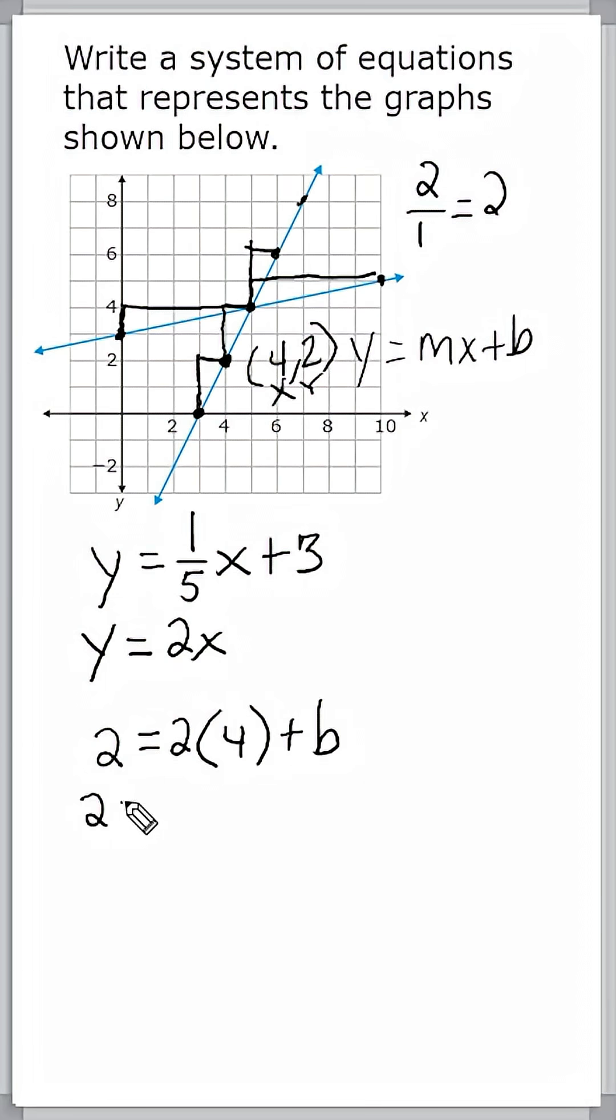So we can simplify our equation a bit to be 2 equals 8 plus b. And then we're going to take this positive 8 and add negative 8 to that to turn that into 0 and balance our equation on the left side. That gives us negative 6 is equal to b.